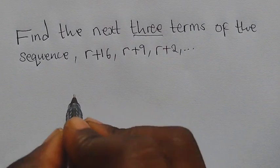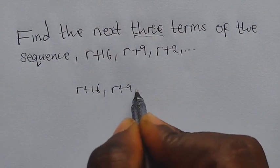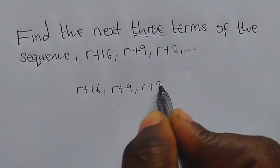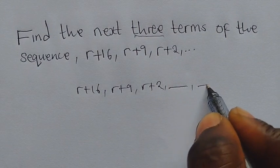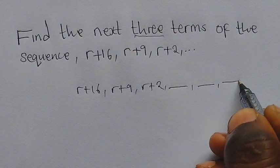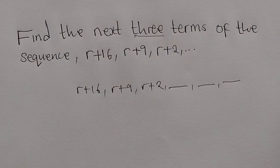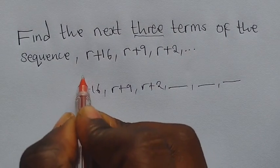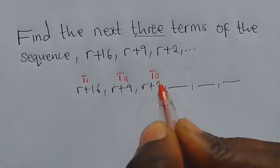Step one: let us write the sequence that we have. This is our sequence. They want us to find the fourth, fifth, and sixth terms. In order to find these terms, we first identify: this is term one, this is term two, and this is term three.